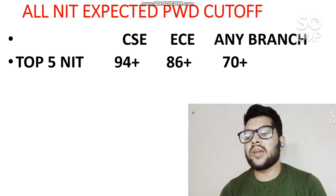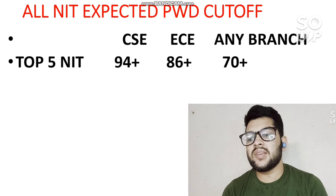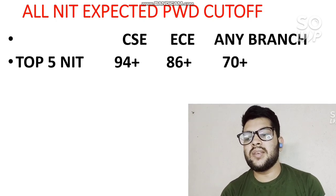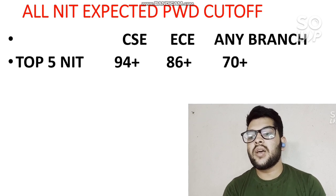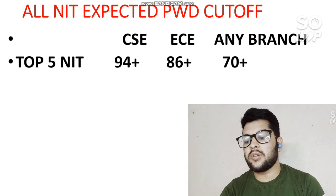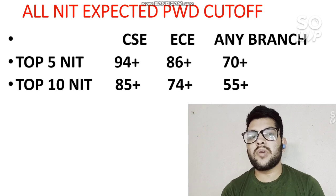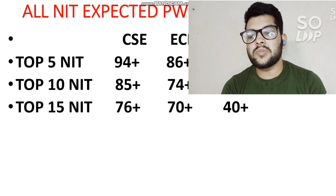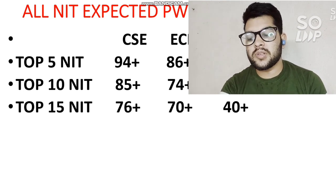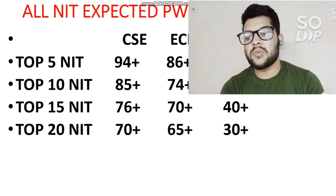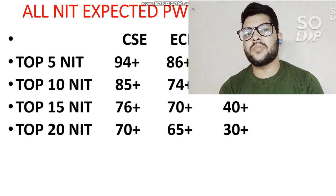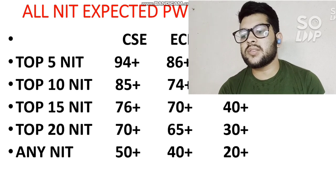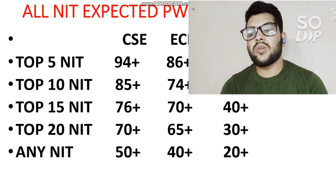For top 5 NITs: CS requires at least 94 percentile, EC requires 86+ percentile, and any other branch (mechanical, civil, electrical) requires 70+ percentile. For top 10 NITs: CS requires 85 percentile, EC requires 74 percentile, and any branch 55+ percentile. For top 15 NITs: CS requires 76+ percentile, EC requires 70+ percentile, and any branch 40+ percentile. For top 20 NITs: CS requires 70+ percentile, EC requires 65+ percentile, and any branch 30+ percentile. To get into any NIT, you need at least 50+ percentile for CS, 40+ for EC, and 20+ for any branch.